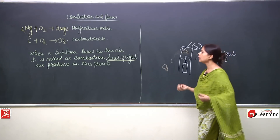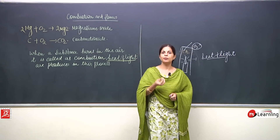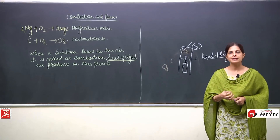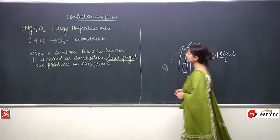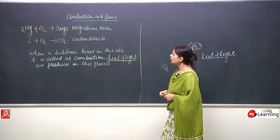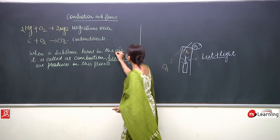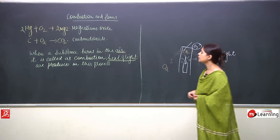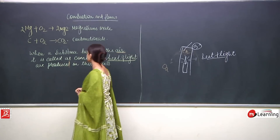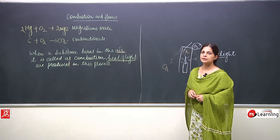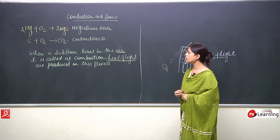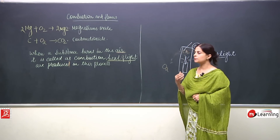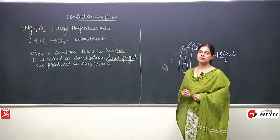This experiment shows two things: for burning, oxygen is required, and whenever a substance burns, it produces heat and light. So to repeat: when a substance burns in the air to produce heat and light, the process is known as combustion.